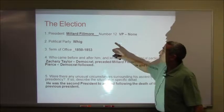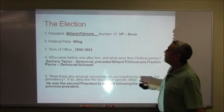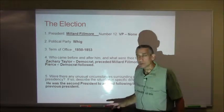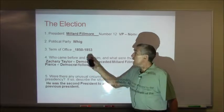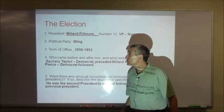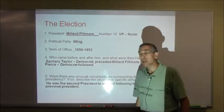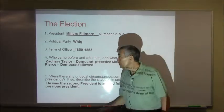President Millard Fillmore, number 12, he had no vice president. His political party was Whig, and his term of office was 1850 to 1853.